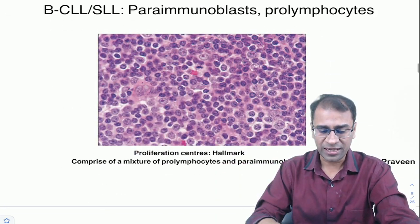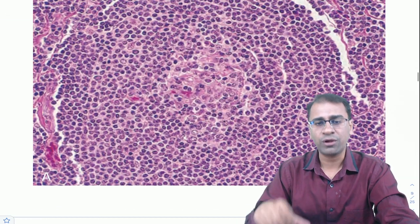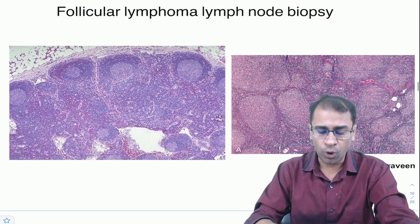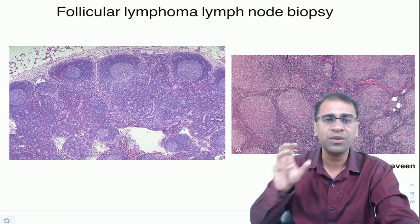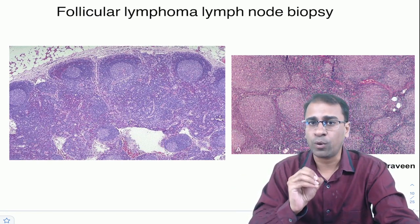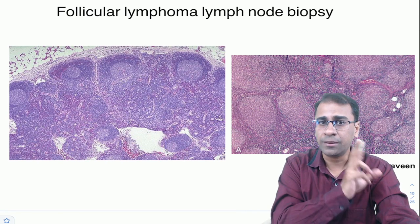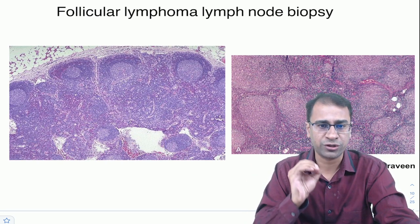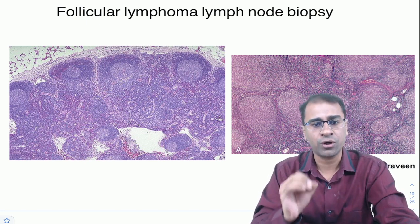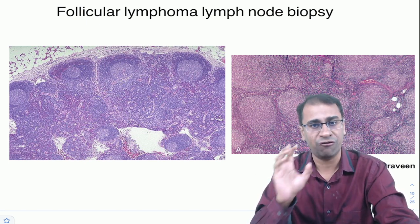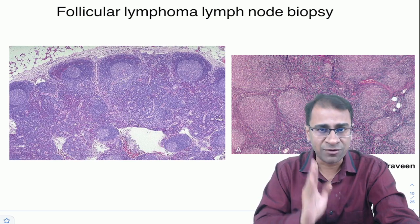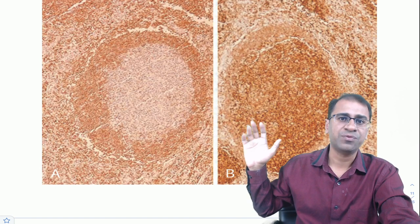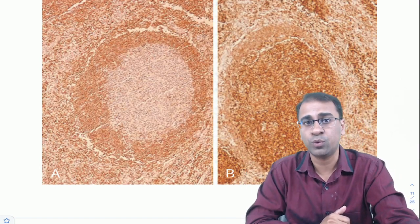Next is follicular lymphoma, which comes from the follicle. Biopsy shows a follicular pattern. Cells are positive for BCL2 — remember: 2L with BCL2. The main translocation is t(14;18). There is also a KMT2D mutation, which is very important. On IHC, BCL2 positivity is seen in the germinal center areas — distinguishing it from normal follicles which are BCL2 negative.